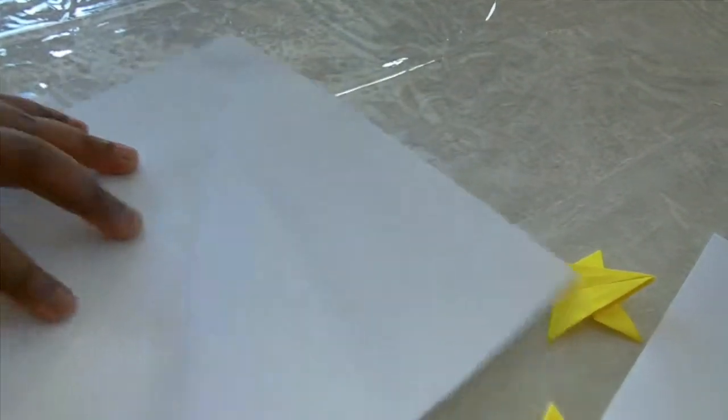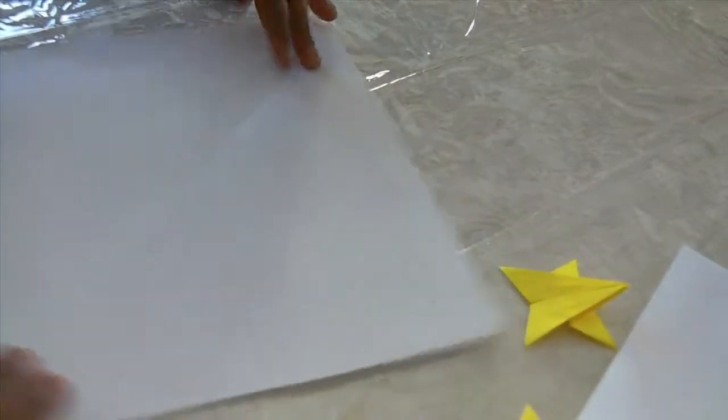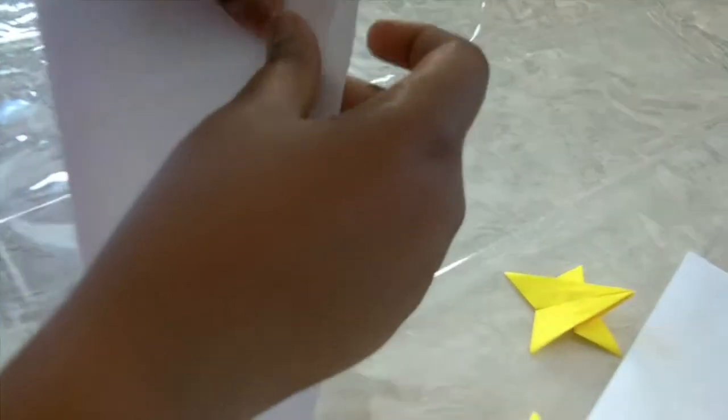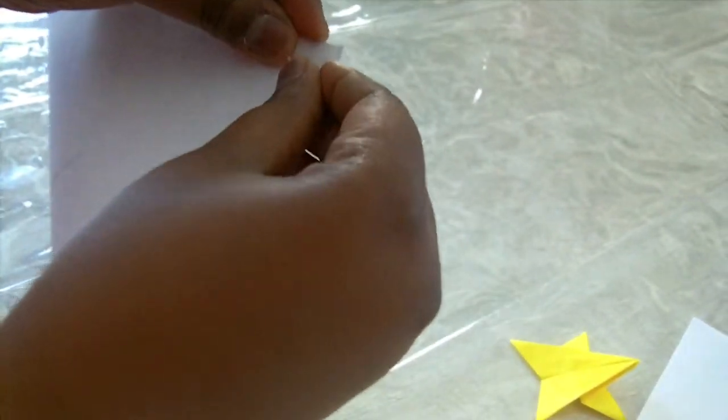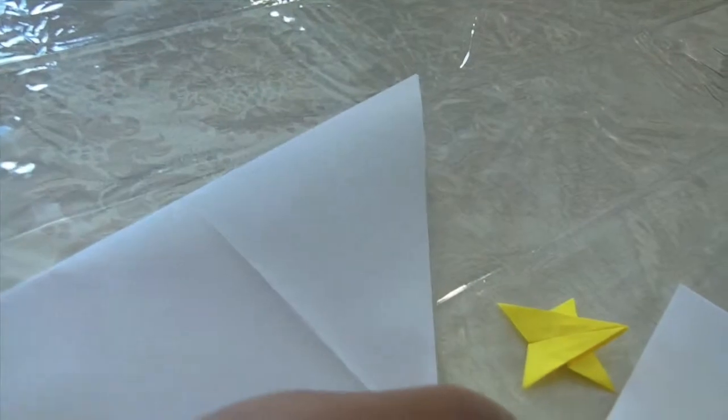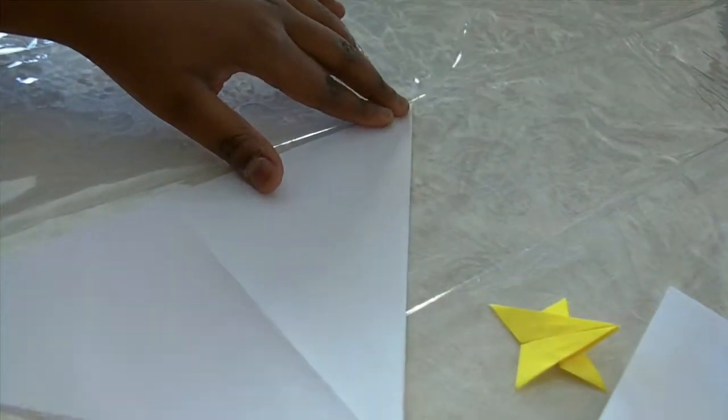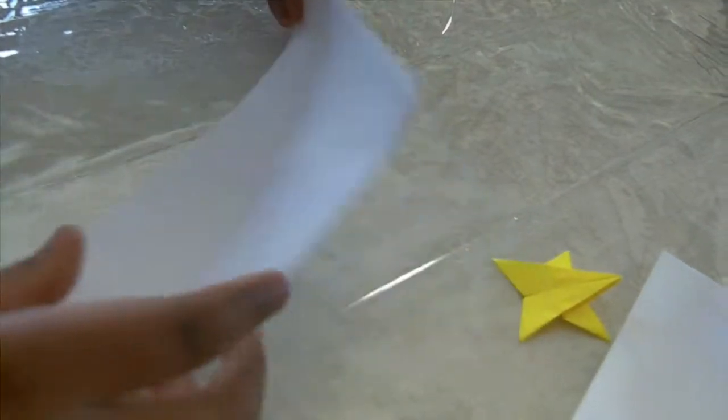So first, you take it, and you fold the corners. Since I already have one corner folded, I'm good there. Here's the second corner, you line it up, flatten it, and smooth, use your nail and go down. Now it's a nice crease, open it up.